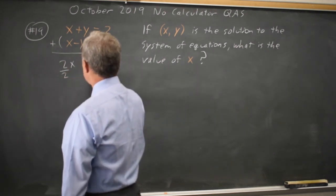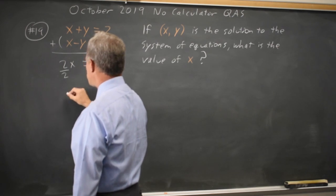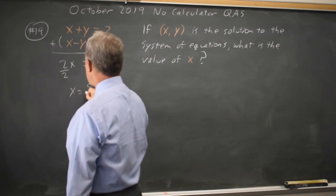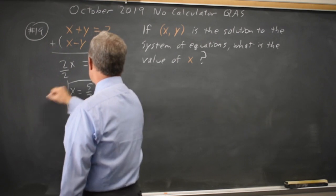To get x by itself, we divide by 2. Always do the same thing to both sides. x equals 5 halves, and that would be the correct answer.